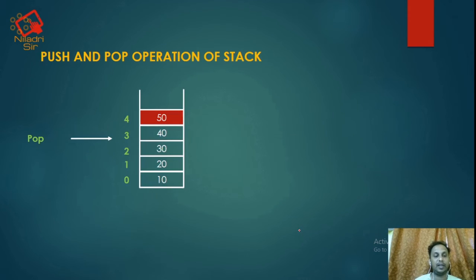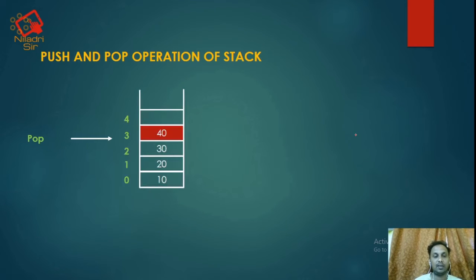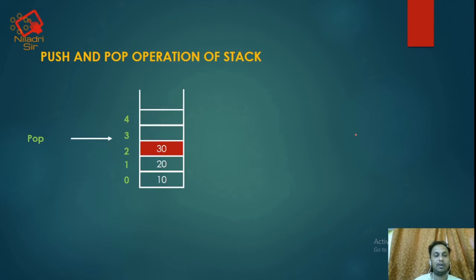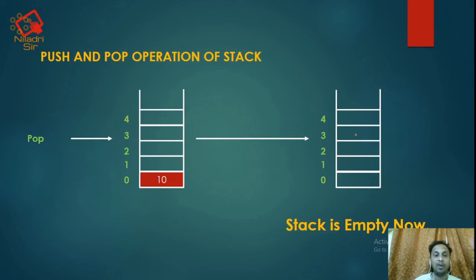Now we will do the pop operation. During pop, the topmost element will be deleted. So 50 is deleted first, and the new top is 40. Next, 40 is deleted, and the top becomes 30. We then delete 30. Once all elements are removed, the stack is empty and we cannot perform any further pop operation — this is called the underflow condition.